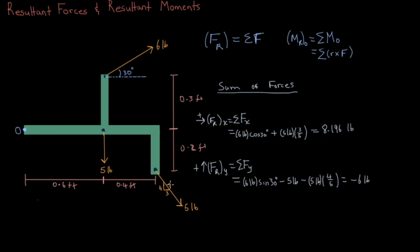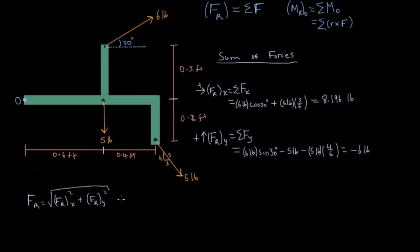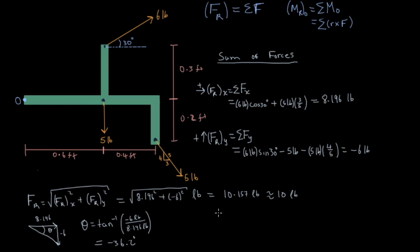To get the resultant force on the system, we would just take the Pythagorean theorem on both components, and then that would give us approximately 10lb. And then the next thing we're going to do is find the angle, which is just going to be the arctangent of negative 6lb over 8.196lb, and that will give us negative 36.2 degrees. The negative sign just means that it's going to be 36.2 degrees below the x axis.